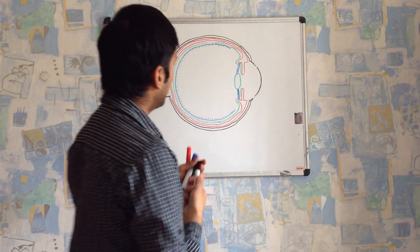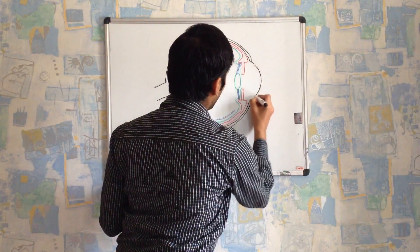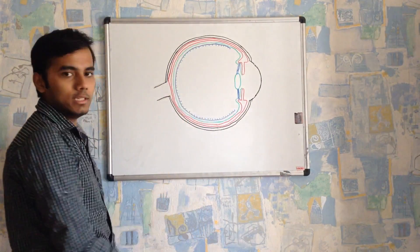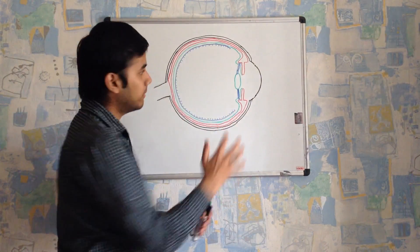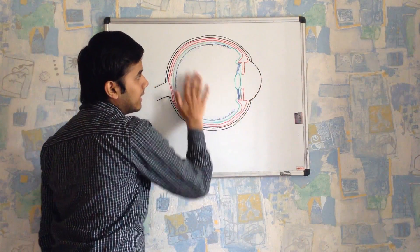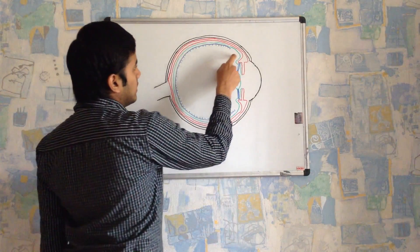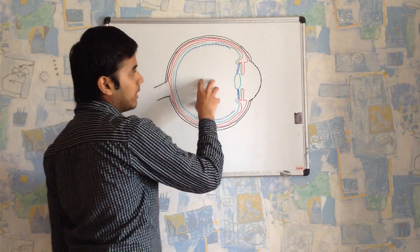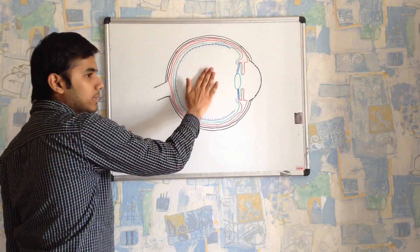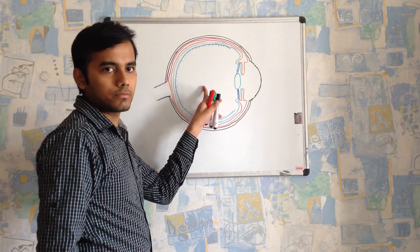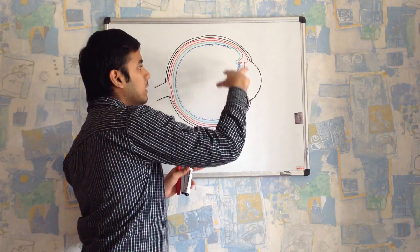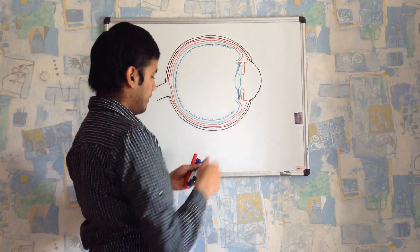Now we'll discuss the structures present inside the eyeball. There are two chambers: this part is called the anterior chamber and the entire posterior part is called the posterior chamber. Both chambers contain fluid. The fluid present in the posterior chamber is called the vitreous humor, and the fluid present in the anterior chamber is called the aqueous humor. These are the two fluid structures present within the eyeball.